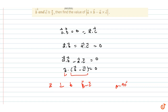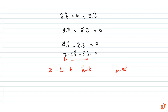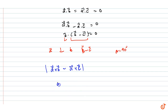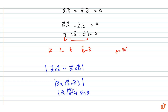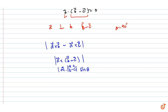Now considering a×b minus a×c, we can write this as a×(b - c). Using the cross product formula, this equals |a| · |b - c| · sinθ. Since a is perpendicular to (b - c), the angle is 90°, so sin 90° = 1. Also, a is a unit vector so |a| = 1.